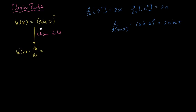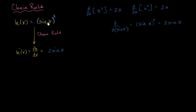The chain rule tells us that this derivative is going to be the derivative of the outer function — x squared — with respect to sine of x, which is 2 sine of x. So we view it as the derivative of the outer function with respect to the inner: 2 sine of x. We treat sine of x kind of like an x, and instead of 2x, we get 2 sine of x.